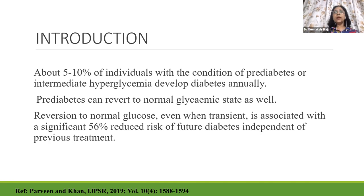About 5 to 10% of individuals with pre-diabetes or intermediate hyperglycemia develop diabetes annually. Risk factors include obesity, android obesity, strong family history with both parents having diabetes, being born to a GDM mother, or signs of insulin resistance such as the black velvety nape of the neck — acanthosis nigricans. These signs can help identify who needs to be screened.